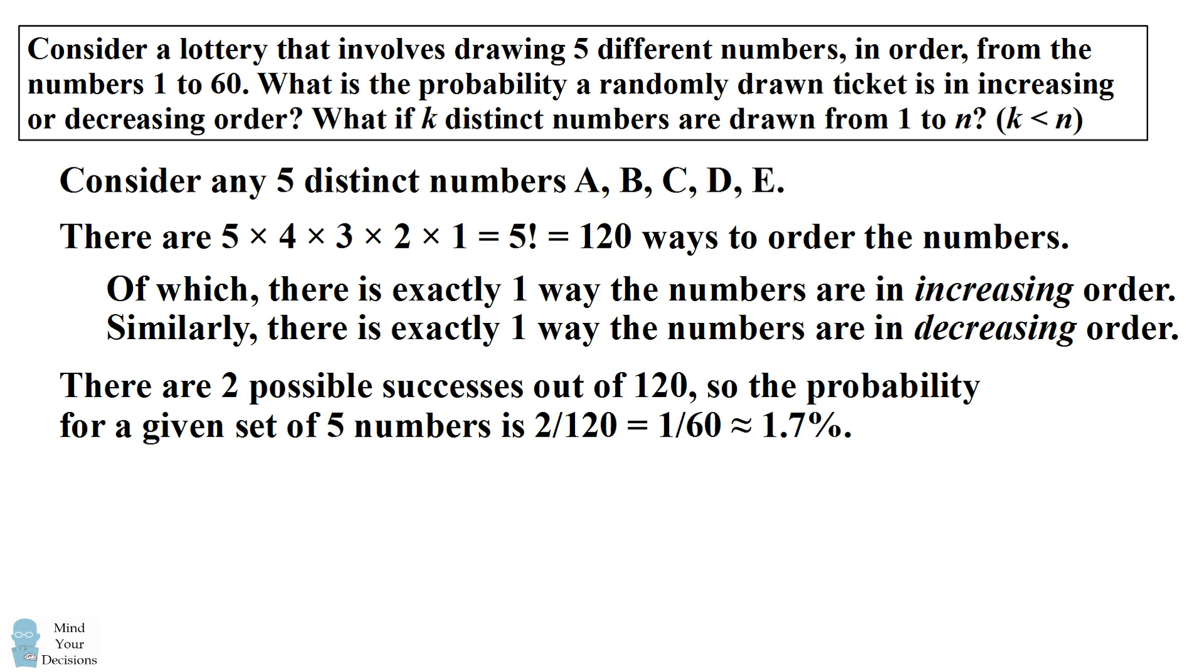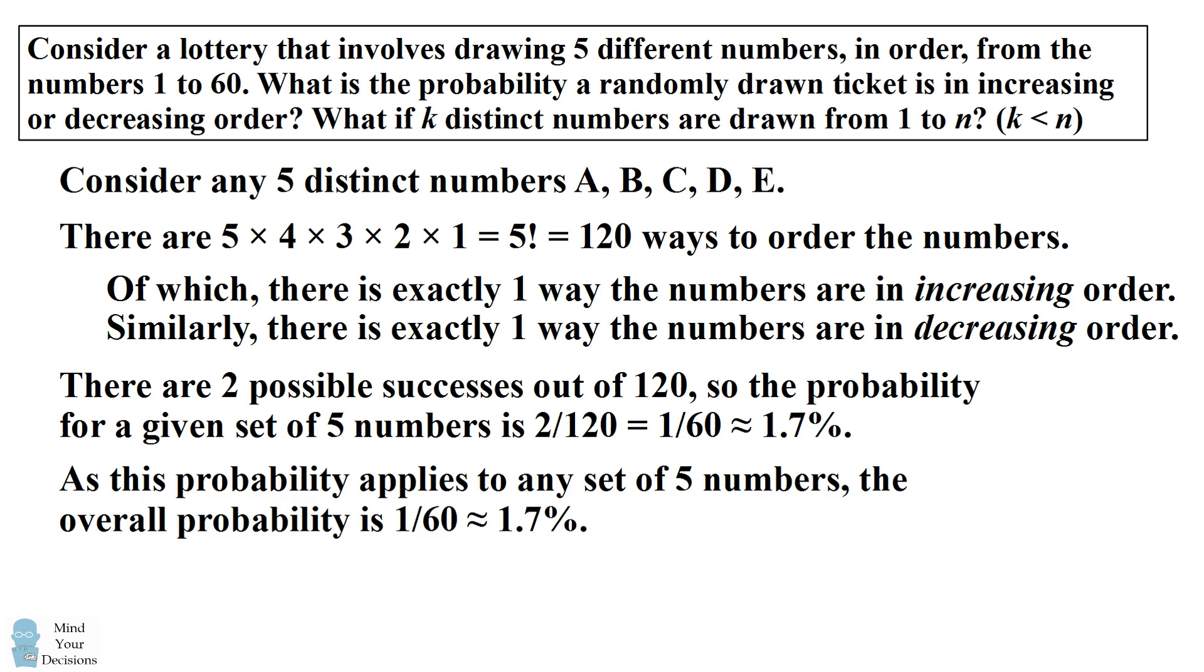Now notice this probability applies to every single set of five numbers. Therefore, the overall probability for the lottery will be 1 out of 60, or approximately 1.7%.